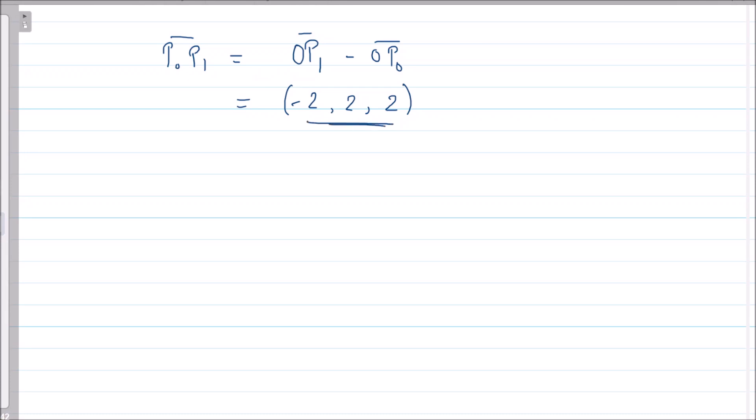Now is this a unit vector? No. So you first find the length of this and divide by the length so that it becomes a unit vector. This is √(4 + 4 + 4) which is √12, which is 2√3. Therefore your unit vector, you divide this by 2√3, so you have -1/√3, 1/√3, and 1/√3. This is the direction vector which is a unit vector.